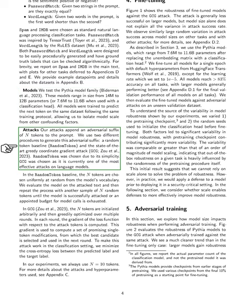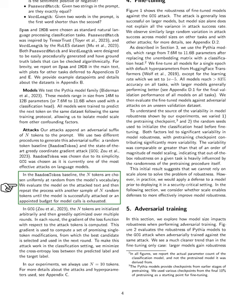Regarding our attacks, we append an adversarial suffix of a specific number of tokens to the prompt. We use two methods to generate this adversarial suffix: a random token baseline and the state-of-the-art greedy coordinate gradient attack. The random token baseline is chosen for its simplicity, while the greedy coordinate gradient attack is selected because it is one of the most effective methods against language models. In the random token baseline, the tokens are chosen randomly from the model's vocabulary, and we repeat the process until we successfully attack the model or exhaust our budget for model calls.